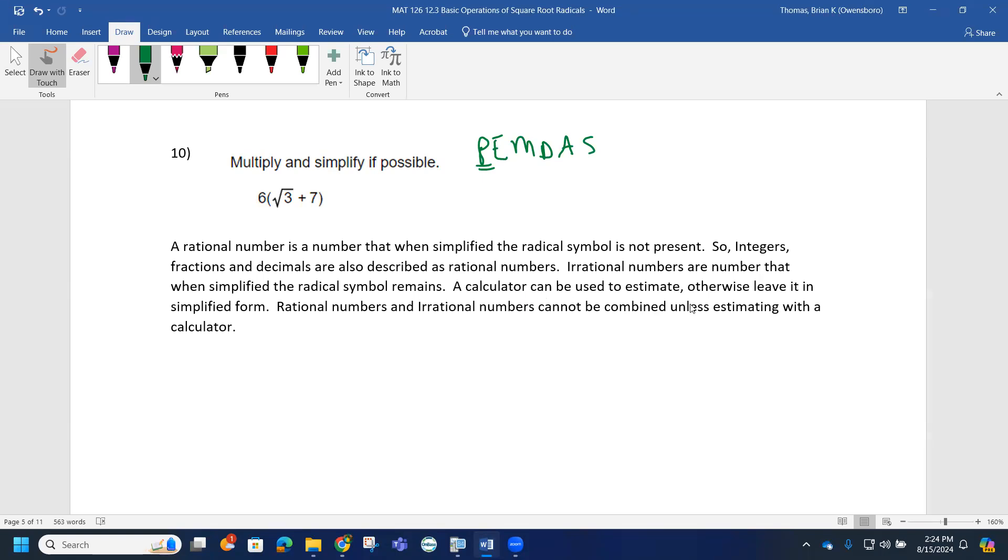A calculator can be used to estimate, otherwise leave it in simplified form which means the radical stays. Rational numbers and irrational numbers cannot be combined unless estimating with a calculator. If I want to simplify without a calculator, the radicals have to stay in the problem.